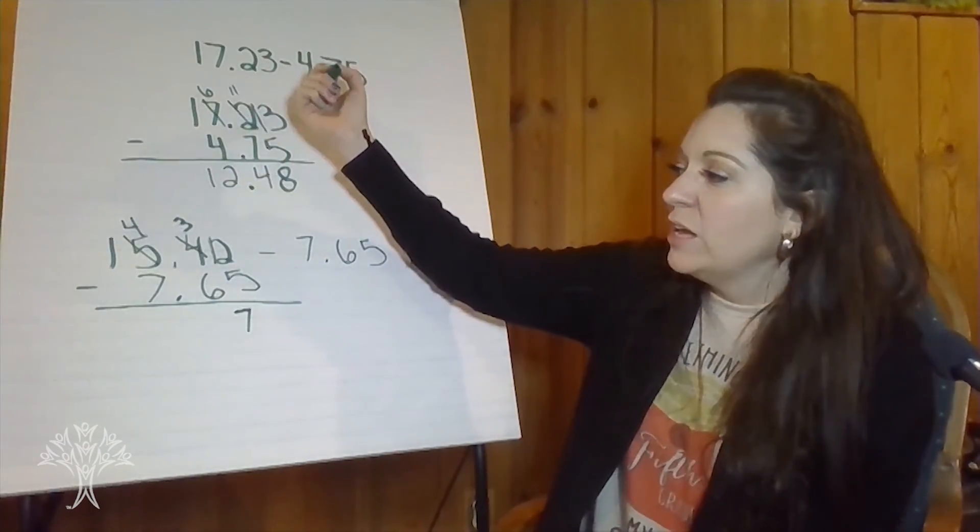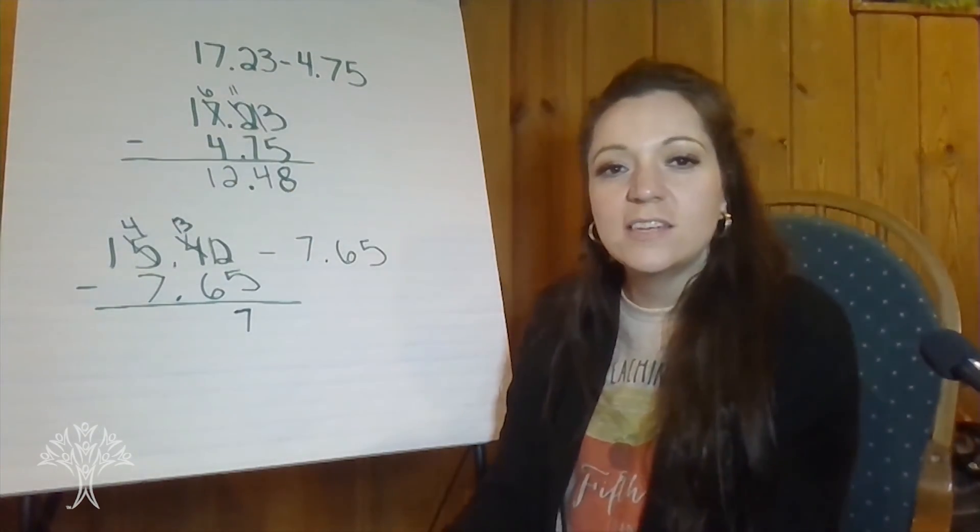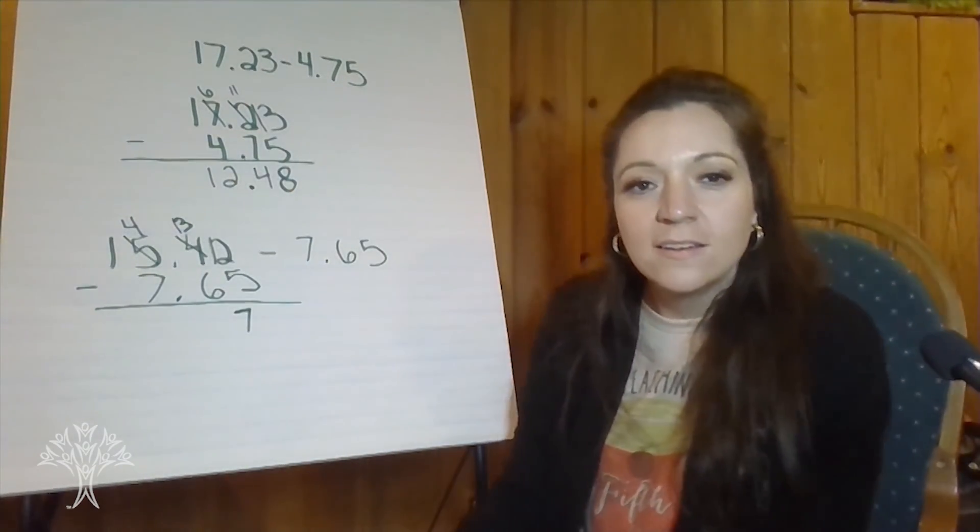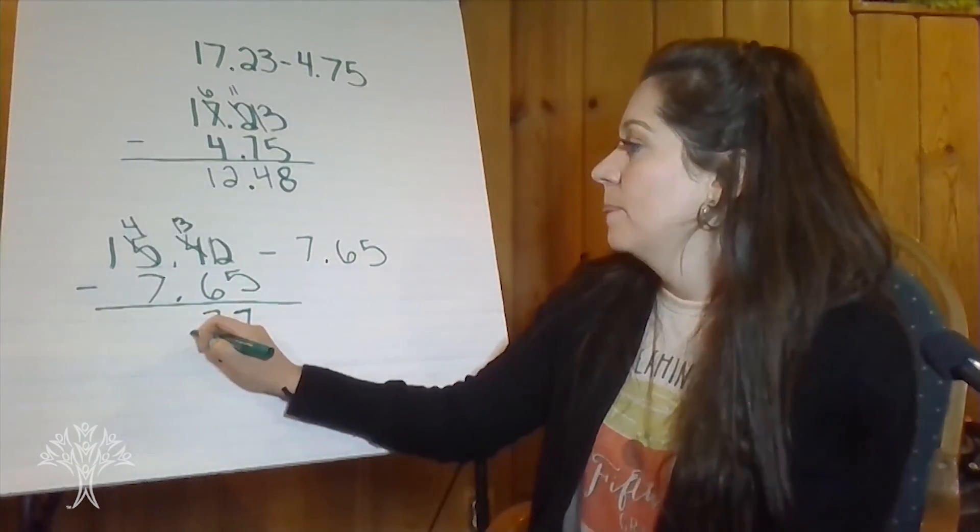We take a one and we break it into ten tenths. So now we have thirteen tenths. Thirteen tenths take away six. Seven tenths. Okay?